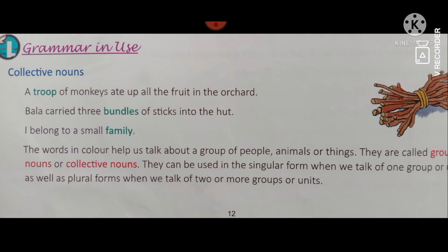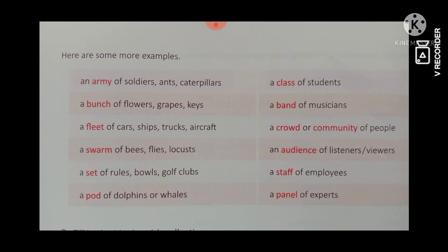Now we see more examples of collective nouns. An army of soldiers; army of ants. A bunch of flowers — flowers ka group, bunch kaha jata hai. Grapes ka jund ho toh bunch kaha jata hai; keys bunch. Fleet of cars, ships, trucks and aircraft. A swarm of bees, flies and locusts. Set of rules, blouse, golf clubs.